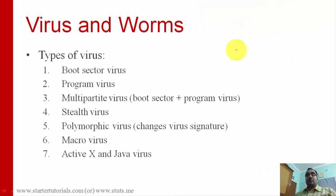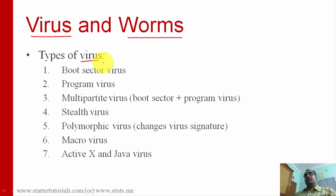Welcome to this session on cyber security. We are going to look at viruses and worms as well as trojans and backdoors. A virus is a kind of malware which needs human intervention to install it on a system. Once installed, it can do several things: change file associations, delete files, change system settings — basically anything the attacker wants.